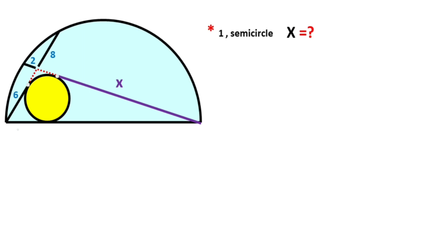First step: notice that if here is six units, then here must also be equal to six units. Why? Because of the two tangent theorem. Likewise, if it is x, this length must also equal x. And notice that here, according to the two tangent theorem, these two parts must be equal. Let's call them 'a'.